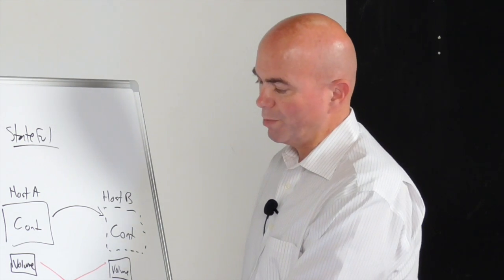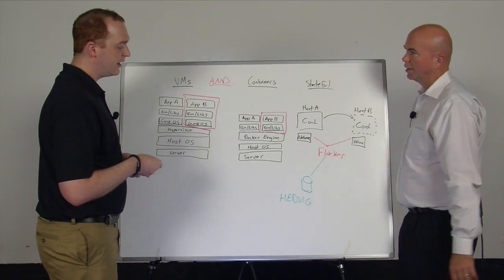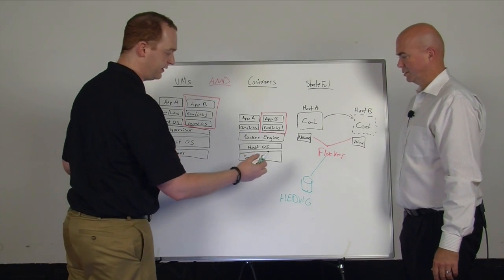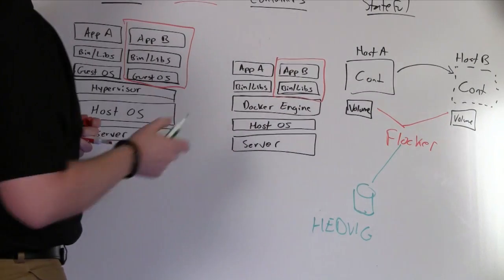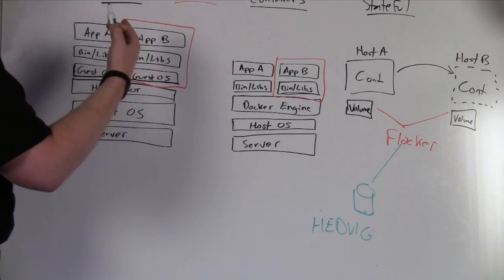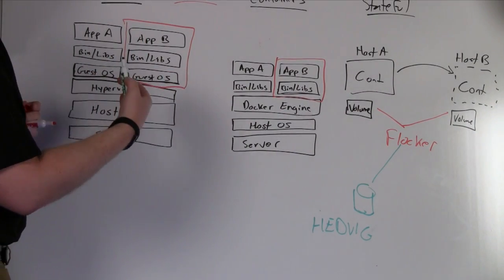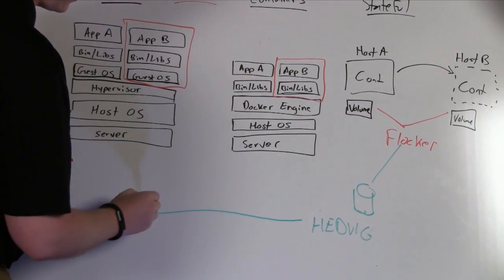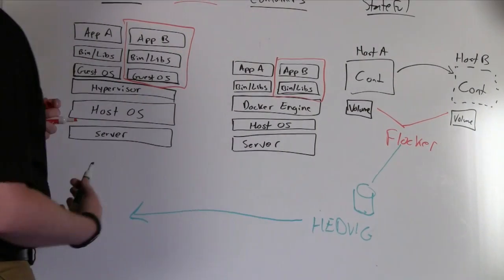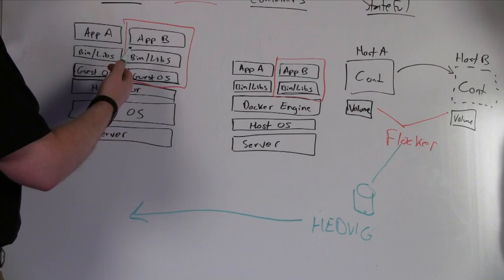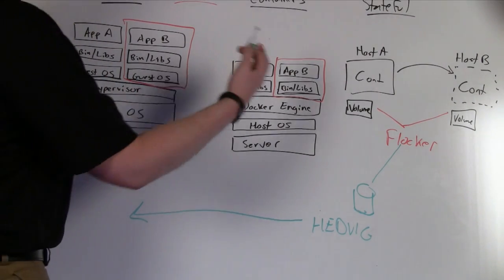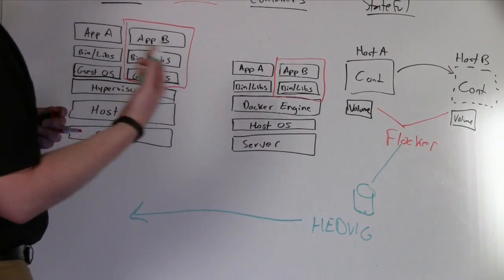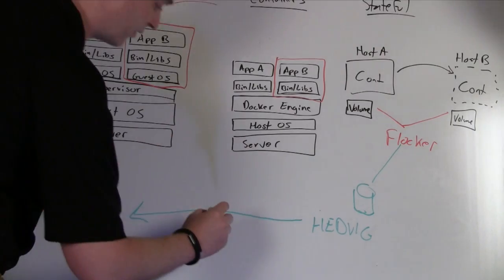So why does enterprise-class features remain so critical here? In this world where I'm now thinking about doing storage for my container environment, as we mentioned before, my VMs don't go away. And so one of the things we're focused on here at Hedvig is how do I get a storage platform that can actually span both environments? So it's just as good for my core applications, my virtualized applications, as these new services. And to do that, we think there's actually three things that you're trying to solve for.